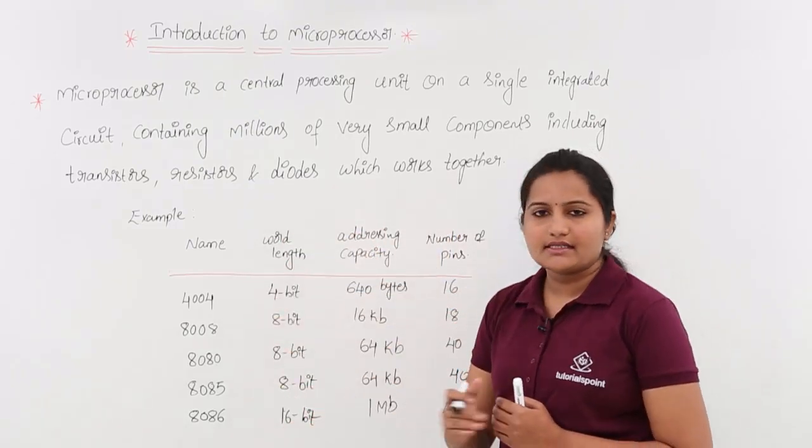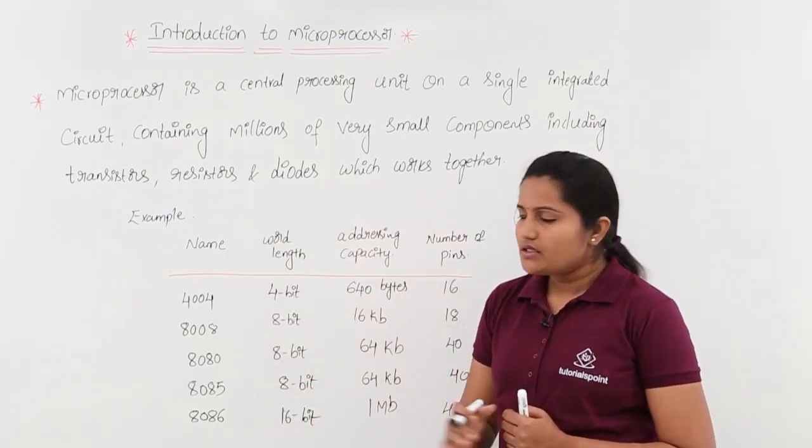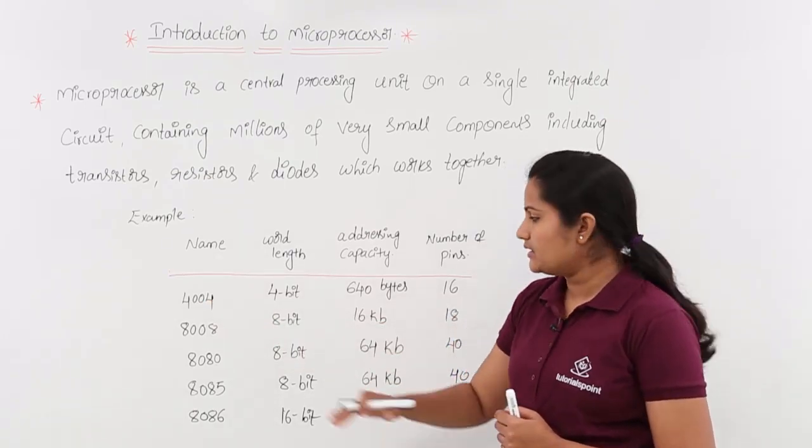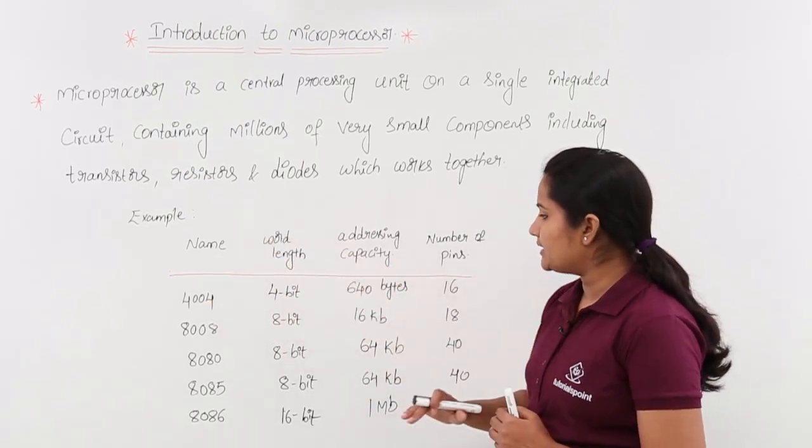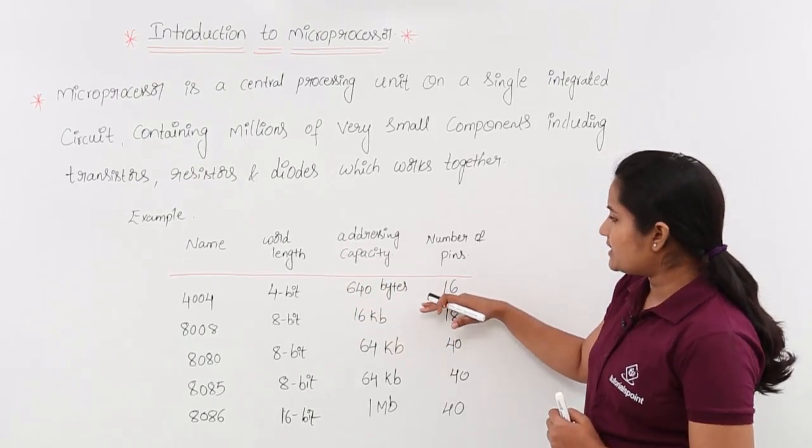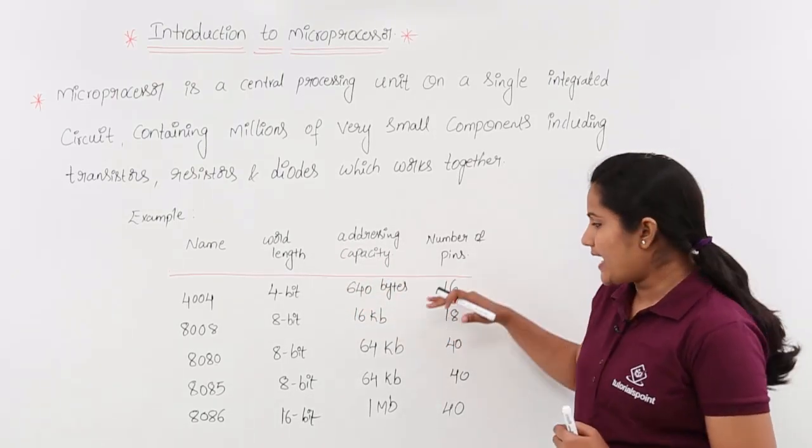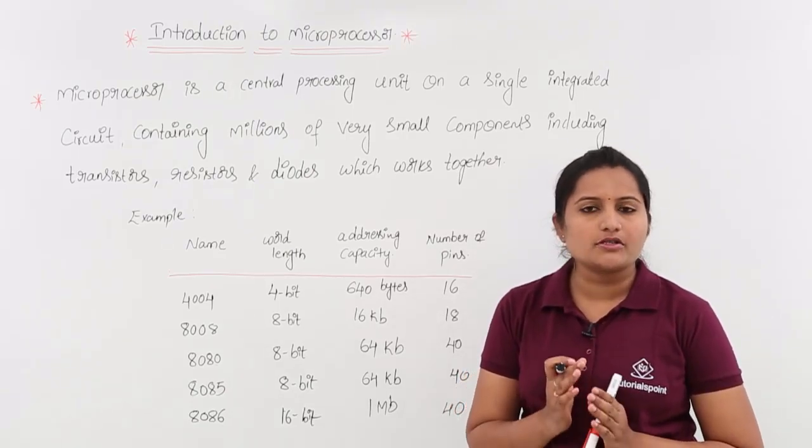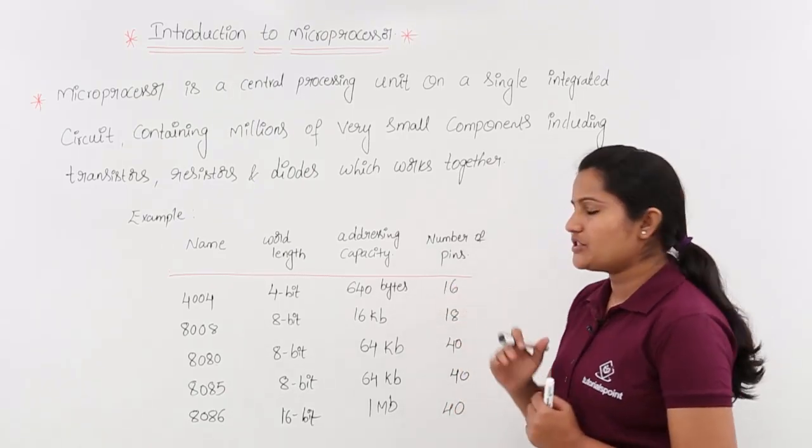Here you can see so many examples for microprocessor. 4004 is one of the starting microprocessors with 4-bit word length and 640 bytes addressing capacity and 16 pins. It is having 16 pins, that means that IC 4004 microprocessor IC is having 16 pins.